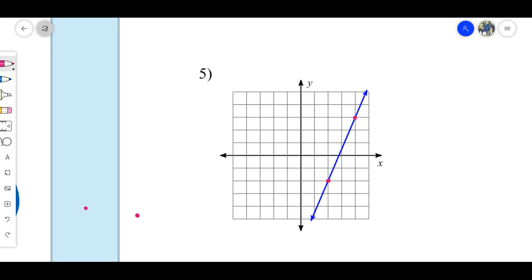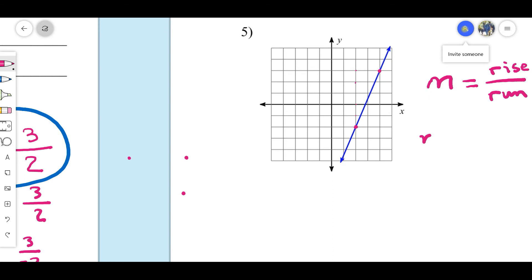Alright. So here we'll go up. One, two, three, four, five units. So our rise will actually be five units positive. And our run after we rise will be two. So the slope is five over two. So this is a slope.